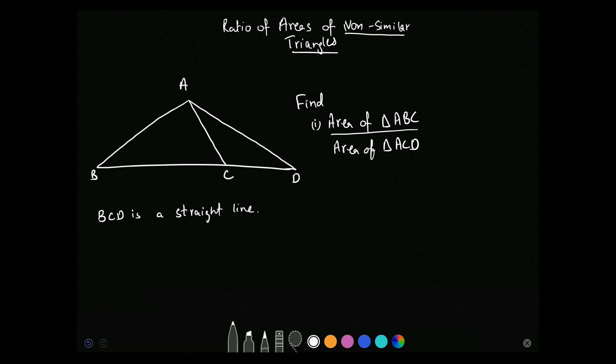This is a question. You have three triangles: ABC is a triangle, ACD is a triangle, and ABD is a triangle. Find the ratio of the area of triangle ABC to the area of triangle ACD. Now, these triangles are not similar. Obviously, they are not congruent.